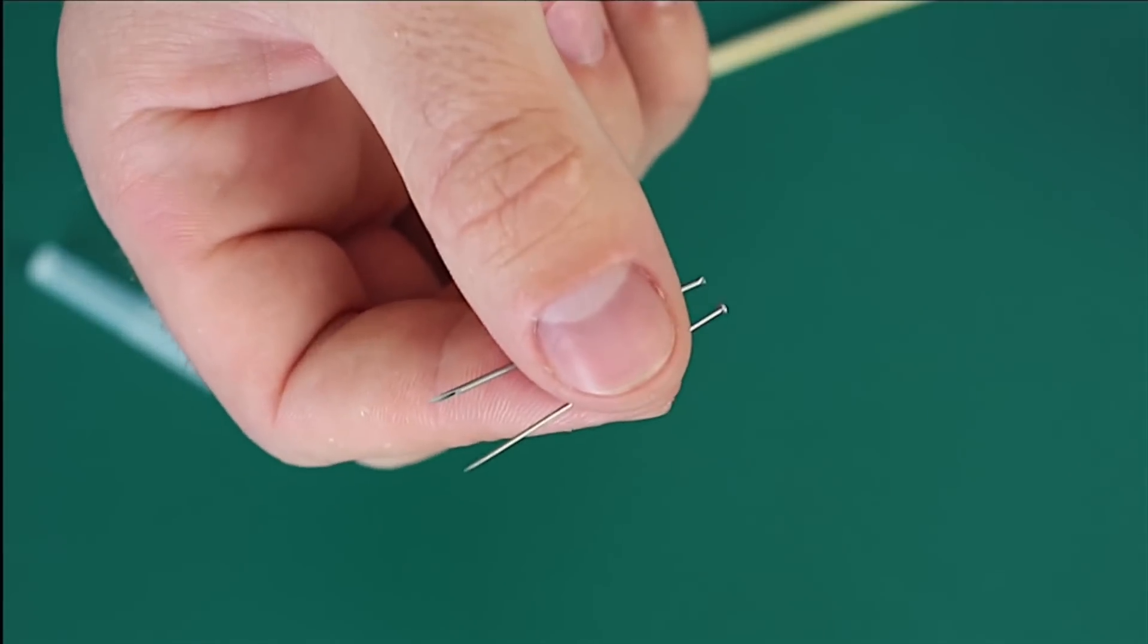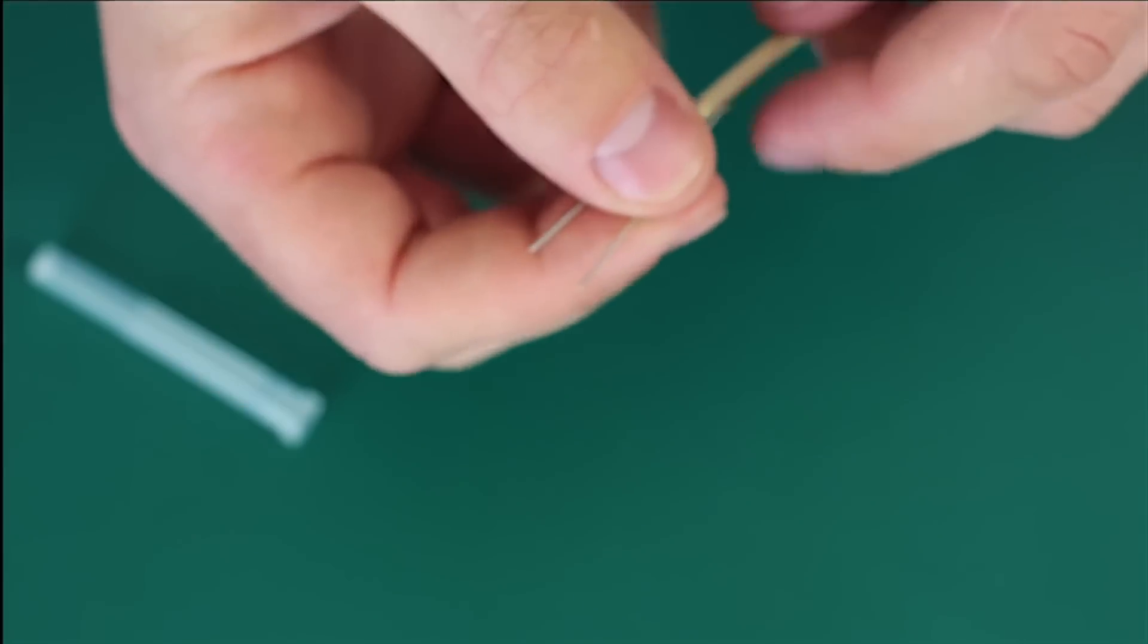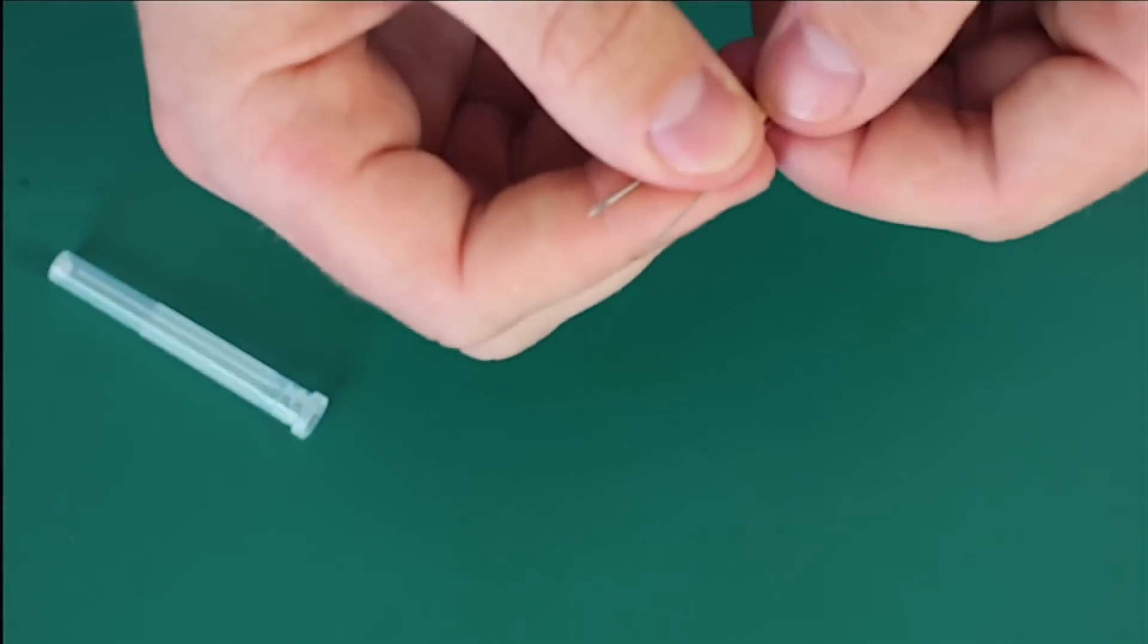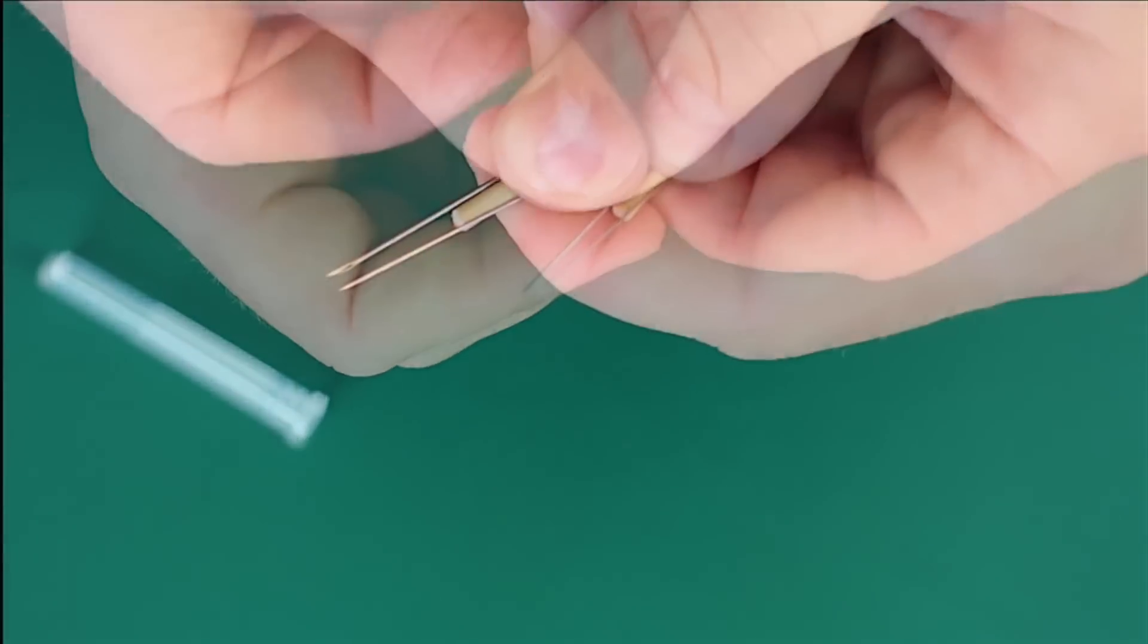Next thing to do is to attach our needles to the stick with the help of some threads. Place the needles parallel to each other on the opposite sides of the stick.